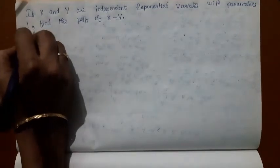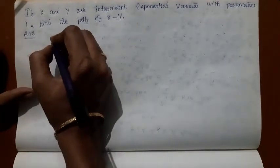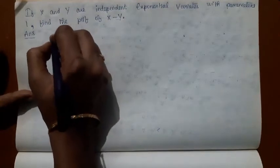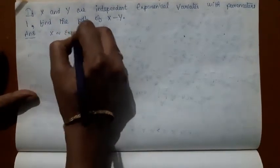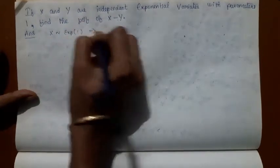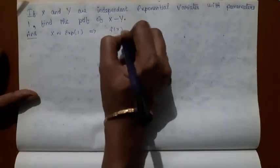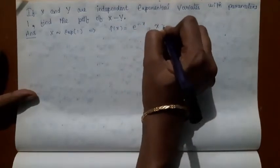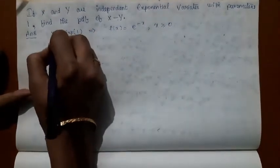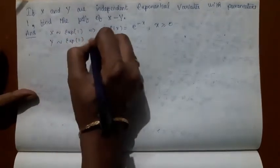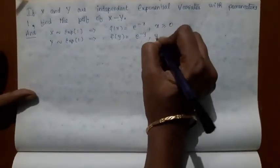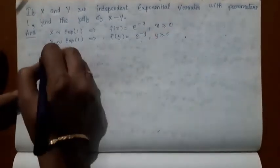We are going to use transformation of random variables to solve this problem. It is given that X follows exponential distribution with parameter 1, which implies f(x) = e^(-x) when x ≥ 0. And Y follows exponential distribution with parameter 1, implies f(y) = e^(-y) when y ≥ 0, and 0 otherwise.